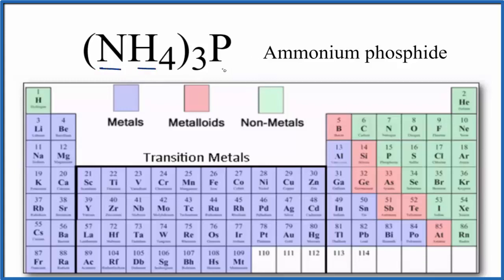We see nitrogen, hydrogen, and phosphorus atoms in the ammonium phosphide compound. Nitrogen, hydrogen, and phosphorus, and they're all nonmetals.